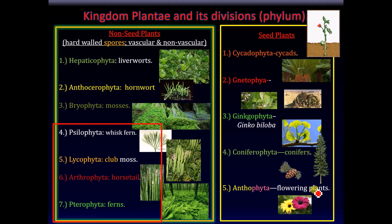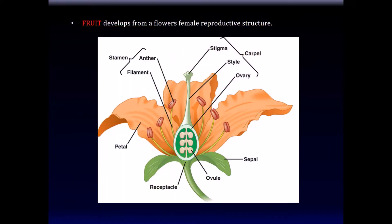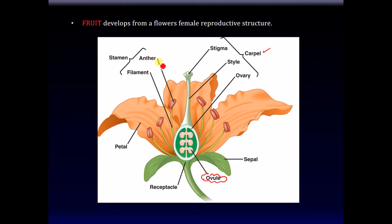In regards to the flowering plants, the end result of a flower, as I stated, is the fruit. The fruit develops from the flower's female reproductive structure. The male reproductive parts are the stamens, which include the anther and the filament. The female reproductive structure is the carpel — the stigma, style, and ovary. In the ovary is the ovule — that's where the egg is. The pollen is produced in the anther and lands on the stigma, then the sperm travels down and fertilization occurs in the ovule. The fruit develops from this structure, and after a while the petals are lost and what we see in the end is the fruit body.